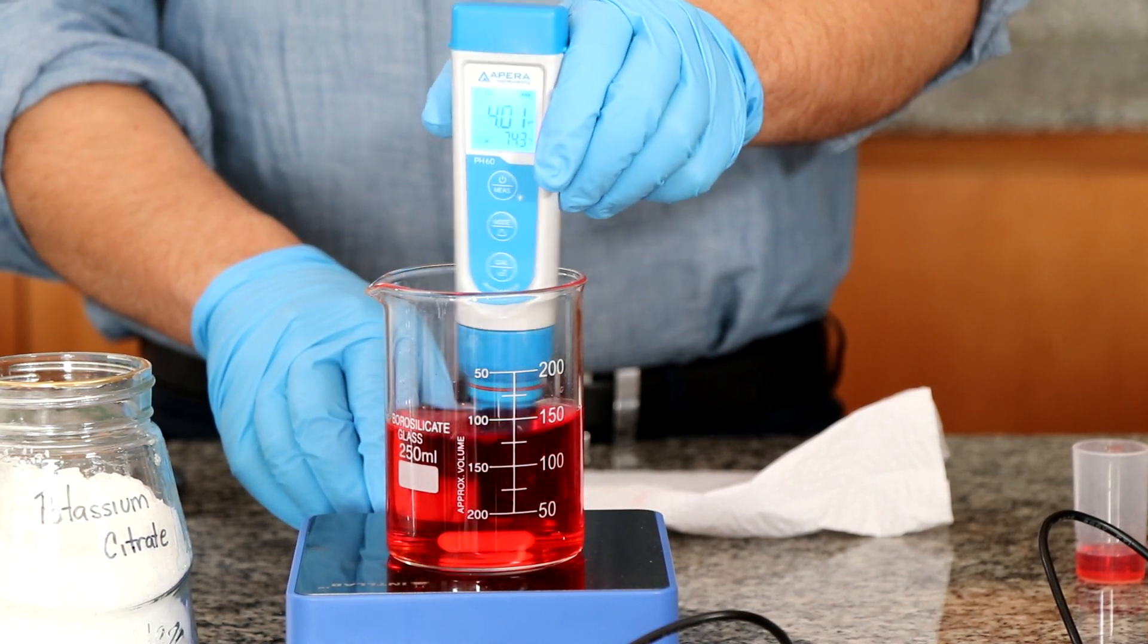Yeah so we're at 3.97 now so I'm gonna repeat the process. We start the stirring, add a little bit of the potassium citrate, let it stir for a bit, whoa okay, let it stir for a bit and put the meter back in, stir the meter in there a little bit, set it there.